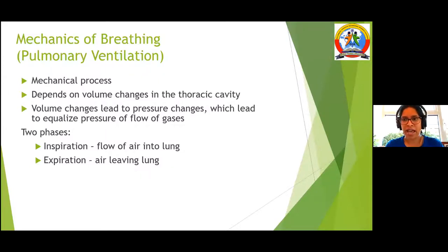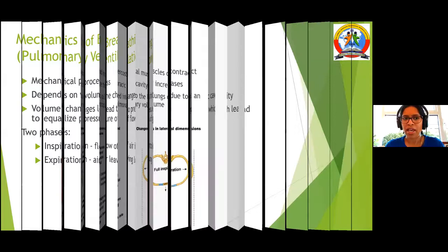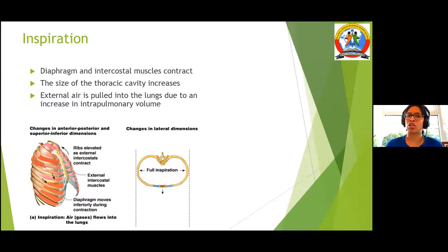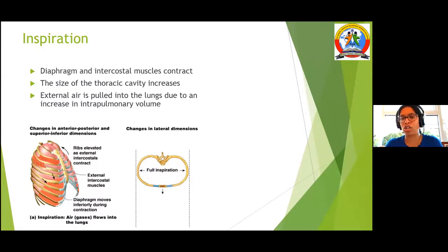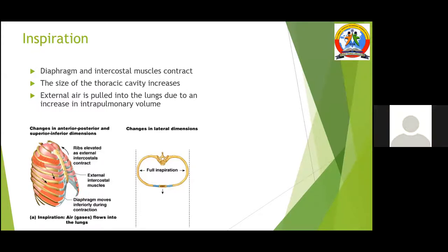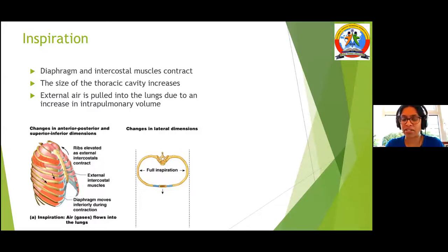It happens in two phases: inspiration and expiration. In inspiration, the thoracic and intercostal muscles contract, so the thoracic cavity increases in space and an increased volume of air is able to go in. I keep coming back to volume and pressure — it is so very important that we understand these concepts in the respiratory system.